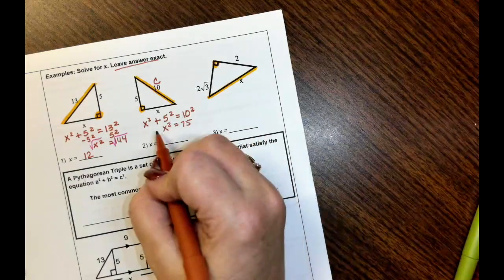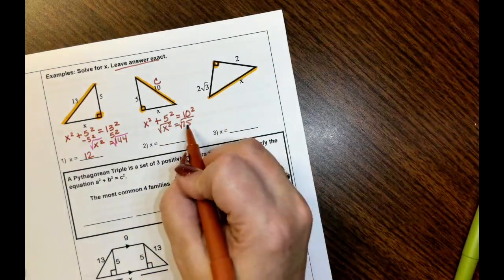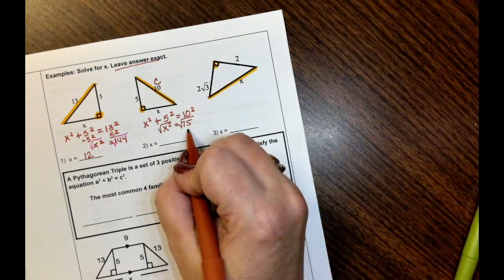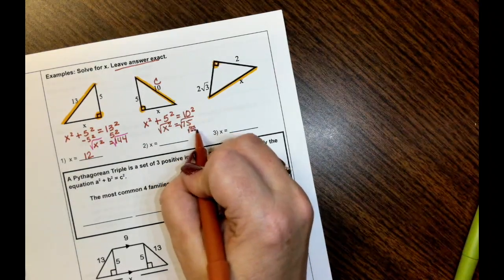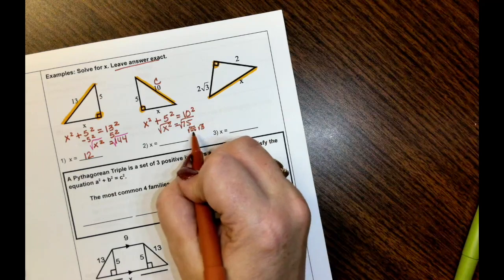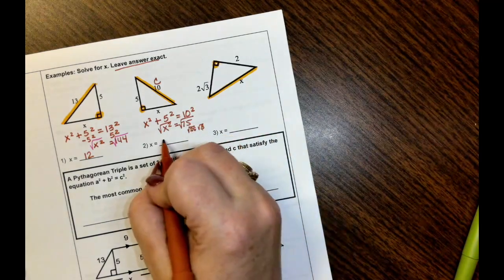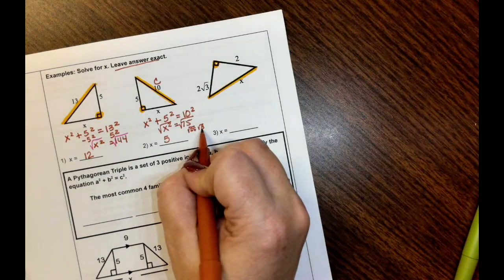The biggest perfect square that goes into, I need to take the square root. The biggest perfect square that goes into 75 is 25. It would be the square root of 25 times 3. So 25 times 3 is 75.